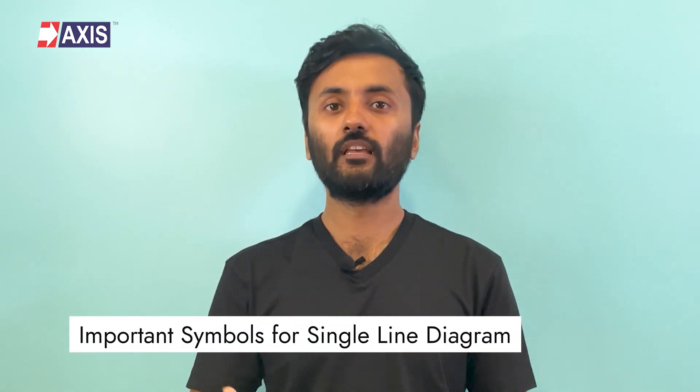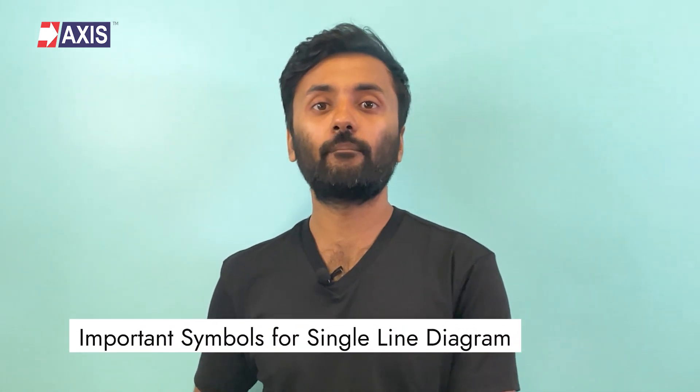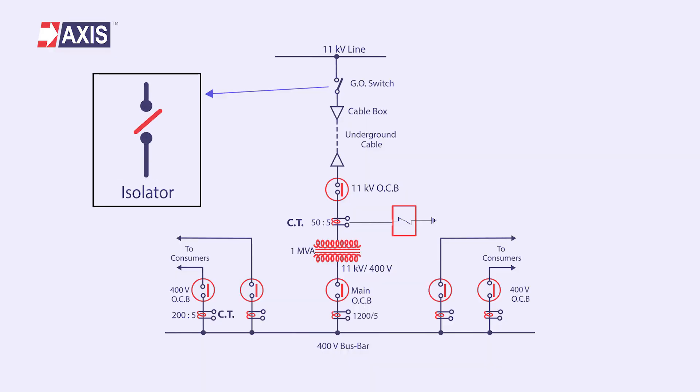Now let's look at some of the important symbols that will help you understand a single line diagram. Firstly, the isolating switch. In power substations, it is required to disconnect a part of the system for general maintenance and repairs. This is accomplished by an isolator — a switch which is designed to open a circuit under no load. For example, if the entire substation is divided into five sections, each section can be disconnected with the help of an isolator for maintenance.